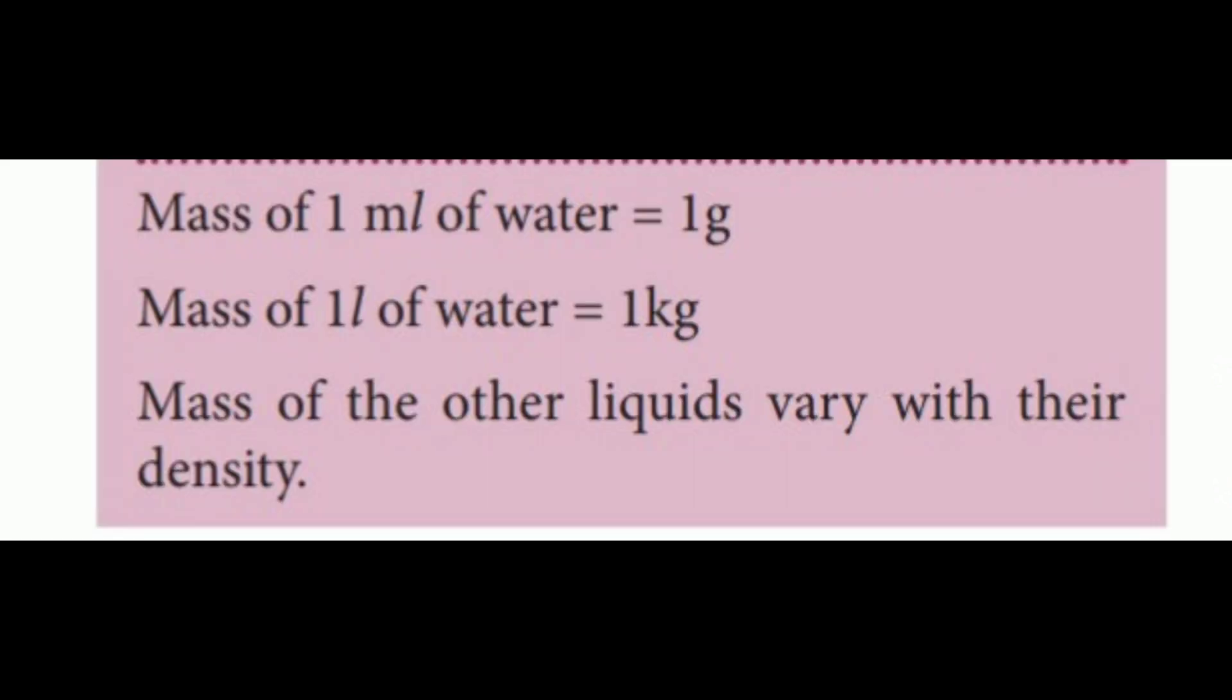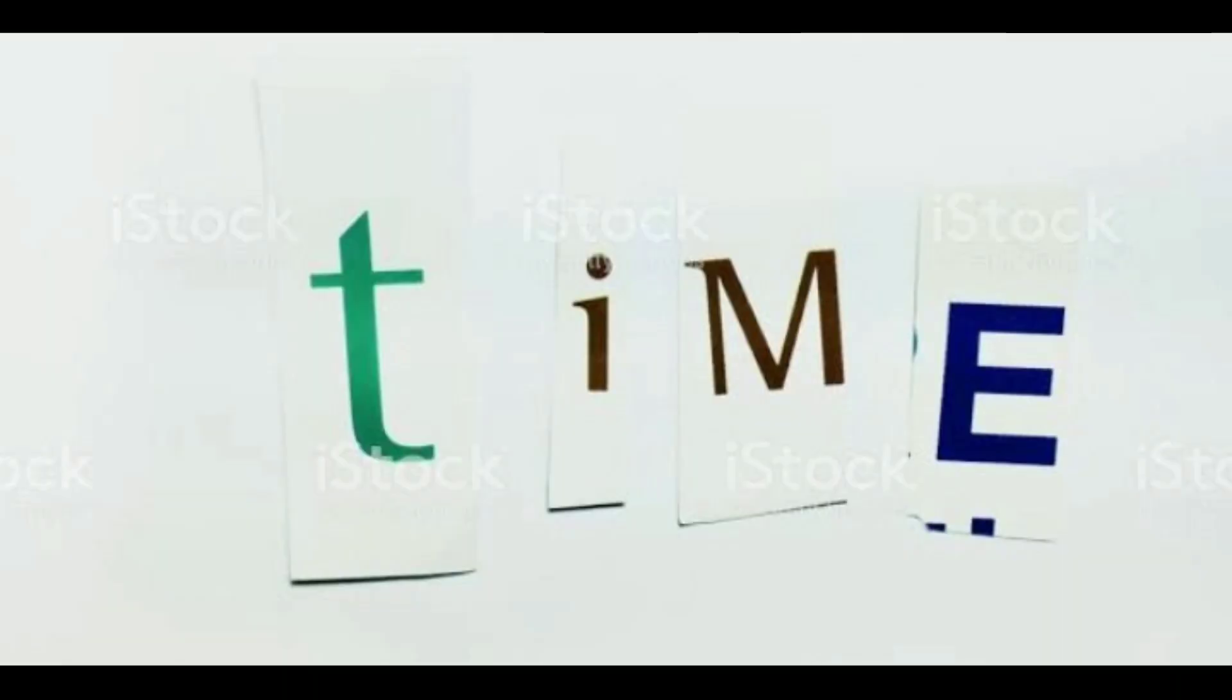Mass of 1 milliliter of water equals 1 gram. Mass of 1 liter of water equals 1 kilogram. Mass of other liquids, kerosene, petrol for example, vary with their density.